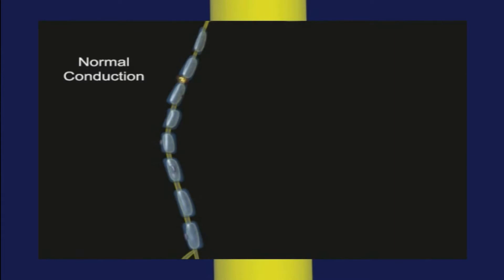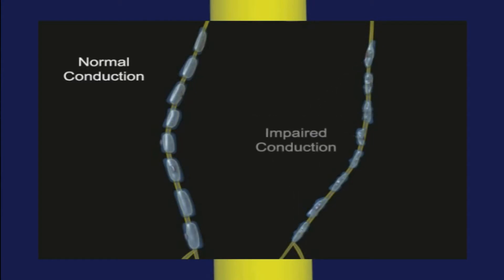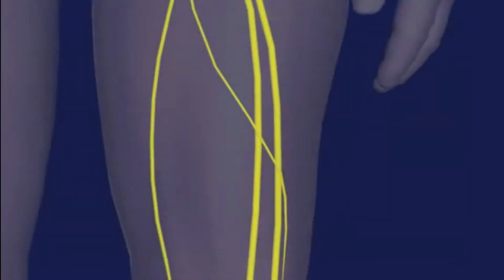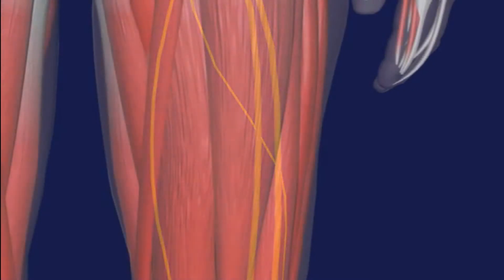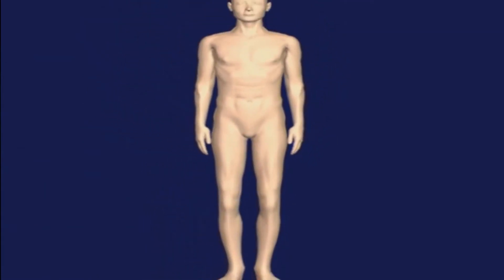Normal conduction along peripheral nerves is facilitated by myelin sheaths. The autoimmune effects in Guillain-Barré syndrome cause inflammatory changes that cause myelin to deteriorate and slow resultant nerve conduction. This leads to ascending muscle weakness or paralysis affecting the lower extremities initially.